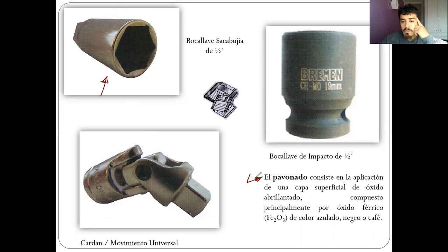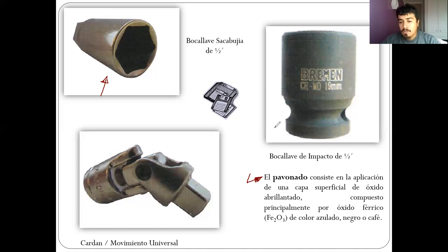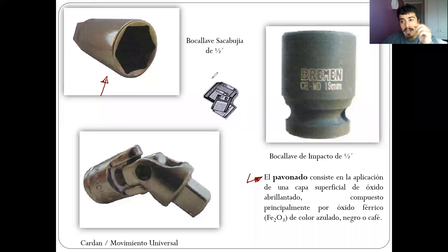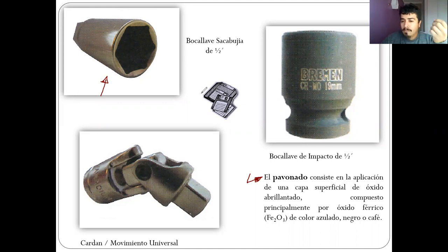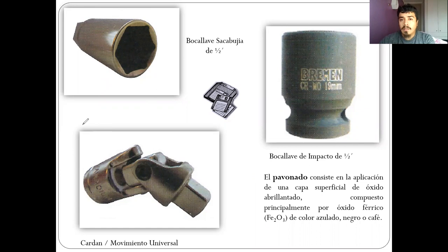Muchos de estos elementos vienen con un trabajo de tratamiento térmico como el pavonado, que consiste en la aplicación de una capa superficial de óxido abrillantador compuesto principalmente por óxido férrico. Esto da mejor resistencia a la corrosión y al impacto. Se reconoce por el color: no va a ser un color metálico brillante cromado, sino más oscuro, negro, café oscuro, azulado bien oscuro. Los que tienen proceso de pavonado normalmente son más costosos.